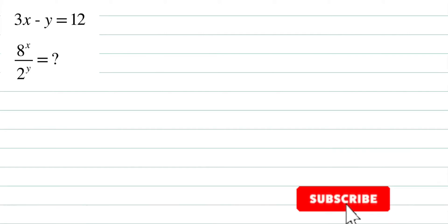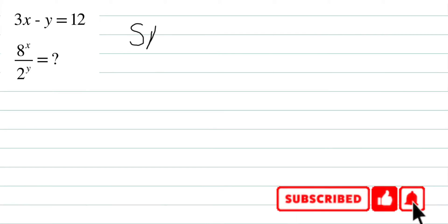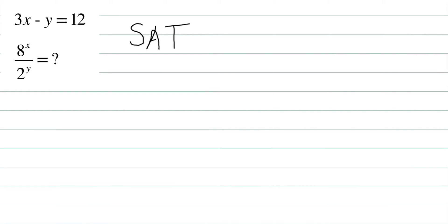Hello everyone, this one is from the SAT exam and is considered one of the most difficult problems. Let's see how to solve it. Given that 3x minus y equals 12, we have to evaluate 8 to the power x divided by 2 to the power y.